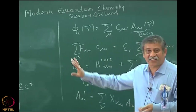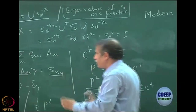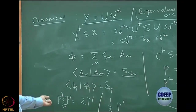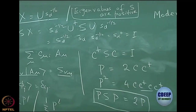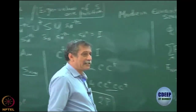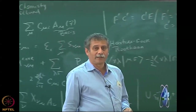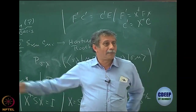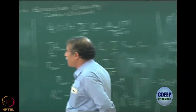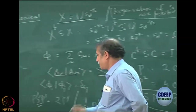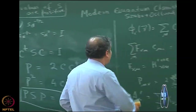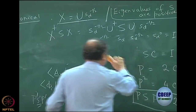These are some interesting things you can play around with — the algebra of the projection operators. Let us move ahead with further interpretation of P. Now the very important thing we can do from the charge density bond order matrix is what is called the population analysis.